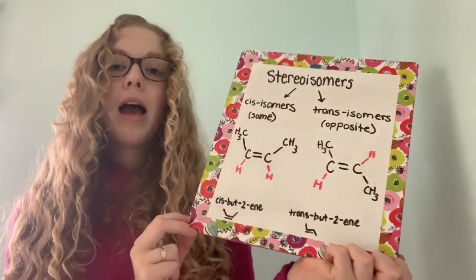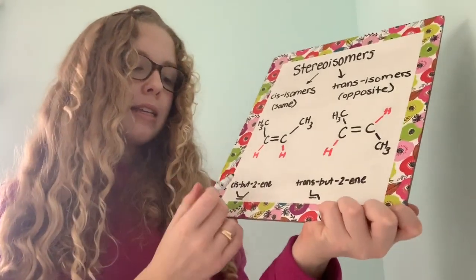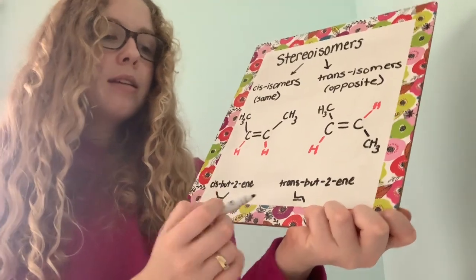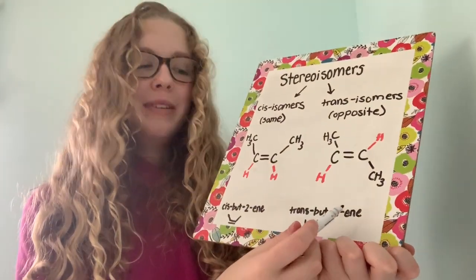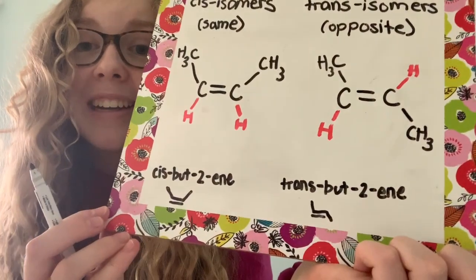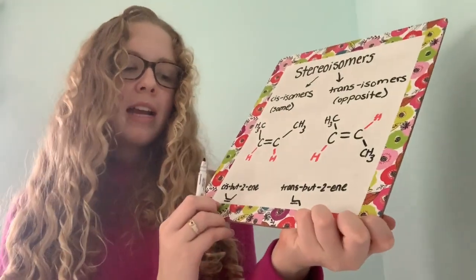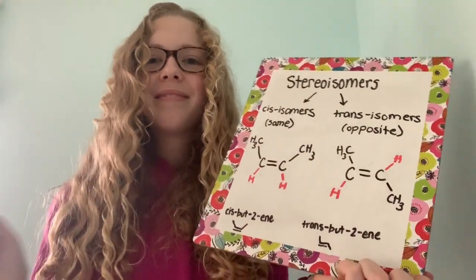Now how you would write this is cis-but-2-ene and trans-but-2-ene. And down here I've indicated the line diagram and how you would actually draw it.